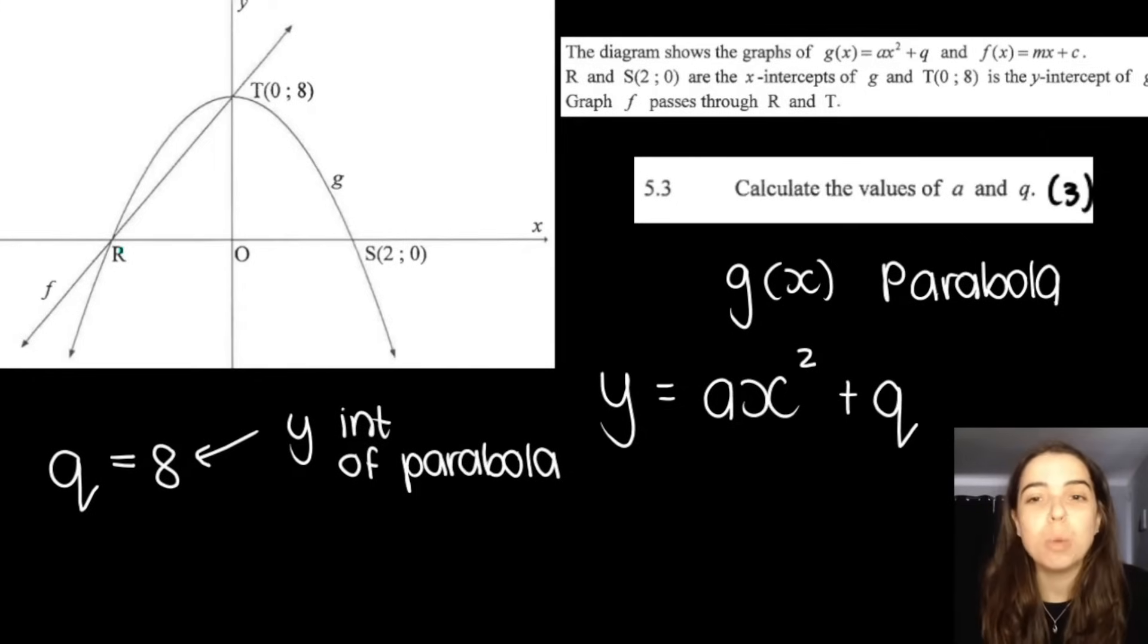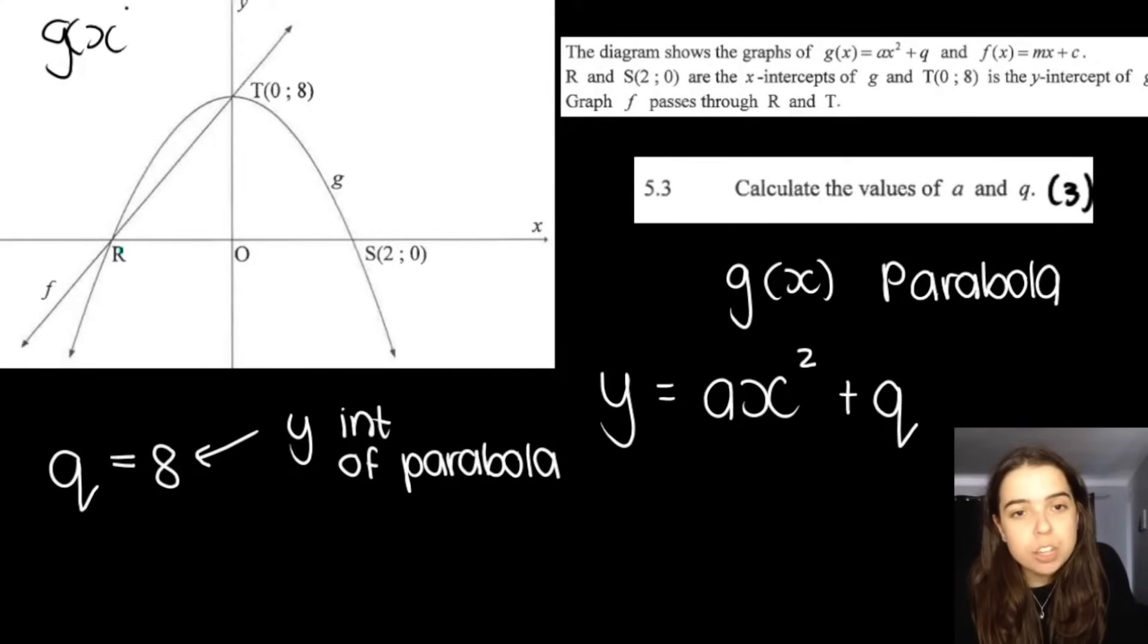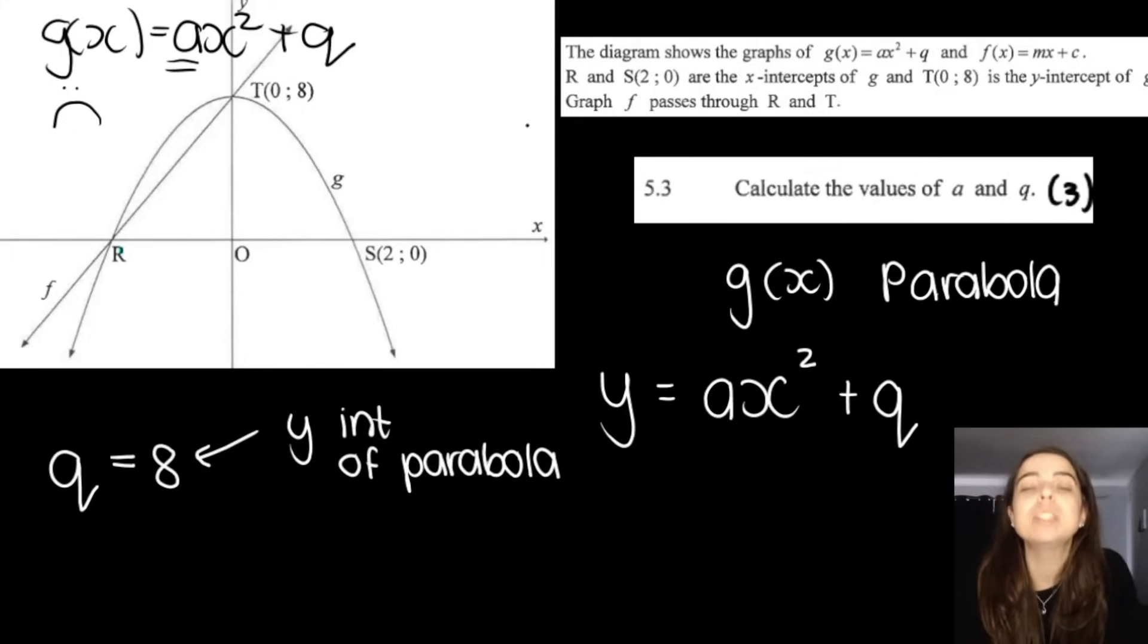The next question wants us to calculate the values of a and q and it is three marks. Remember g of x, the parabola, they told us it's equal to a x squared plus q. Remember a will represent the shape of my graph. We know that a is going to be negative because this graph is a sad face graph. We need to find the value of a however, but immediately we can find q because we know that q is the y-intercept of the parabola, which in this case is 8. So q is 8.